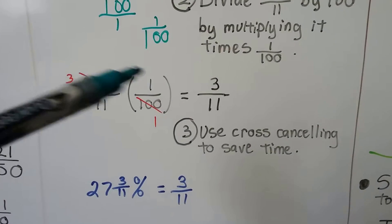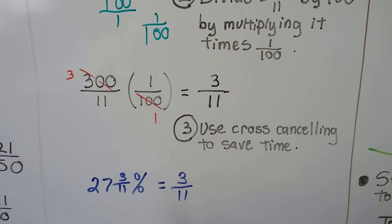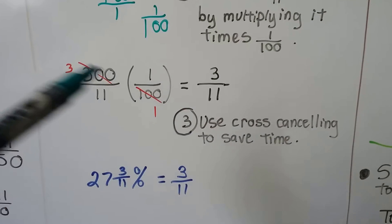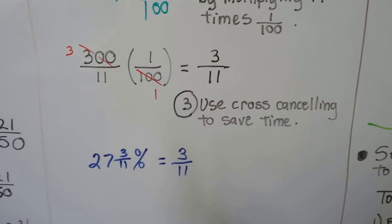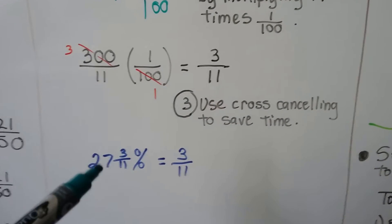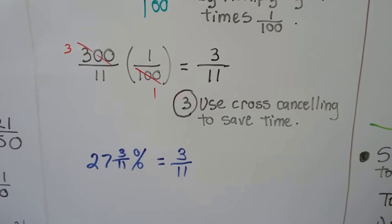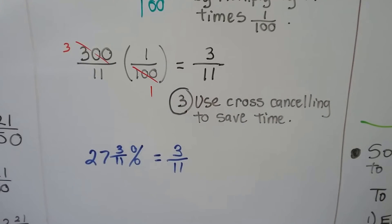We would have had 300 over 1100. Then we would have had to reduce again. But by cross-cancelling, we save some precious time that we have to do on the test. So 27 and 3 elevenths percent equals 3 elevenths as a fraction.